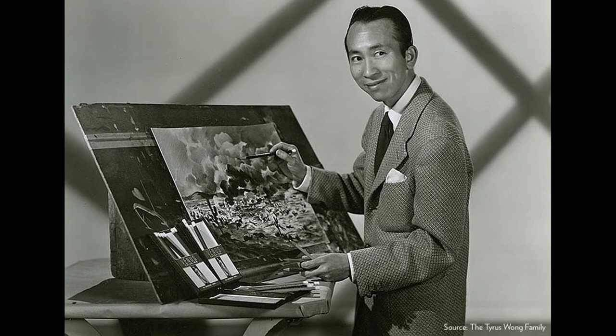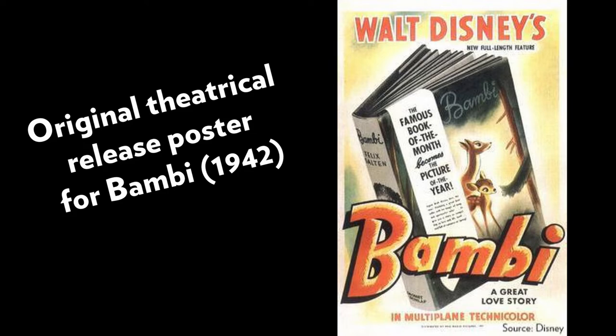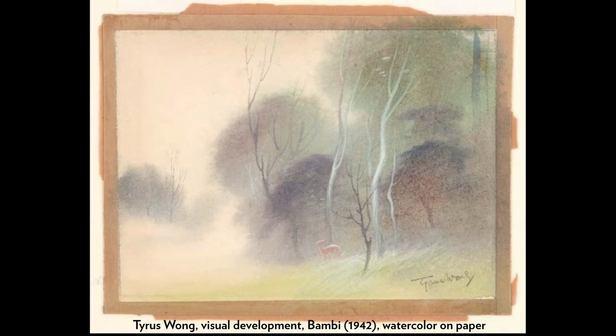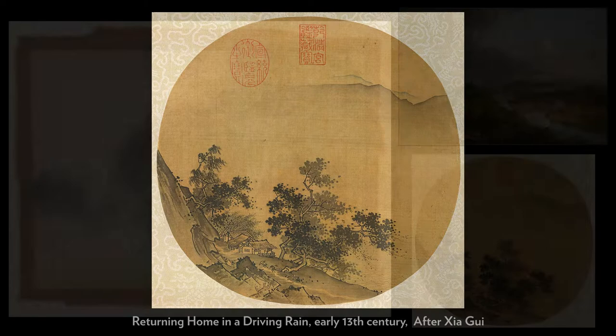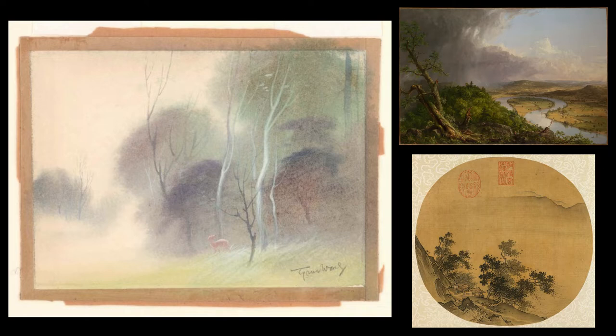When it was decided that Disney was going to make a Bambi movie, Tyrus read the book and made some sketches of the setting and background. His artwork was influenced by American art styles and also by Chinese art styles, especially the Song Dynasty from about a thousand years ago. What do you notice about Tyrus' artwork that is similar to the two other landscape paintings we looked at?